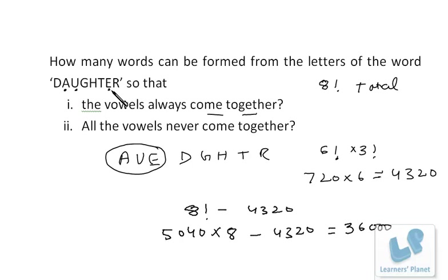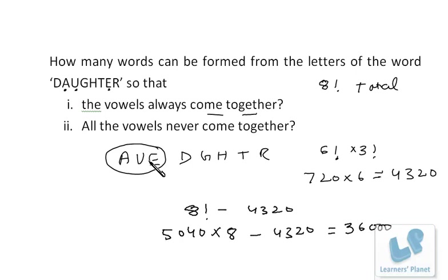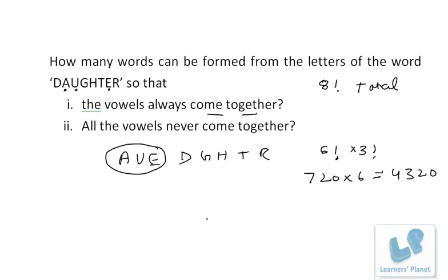To summarize what we've done: first we calculated total arrangements = 8 factorial. For Case 1 (all vowels together) = 6! × 3!. For Case 2 (vowels never all together) = 8! − 6! × 3!. Note that 'never all together' means all three are not together — maybe two are together and one is apart, but not all three. A third case can also be framed: none of the vowels should be together, meaning not even two vowels are adjacent.